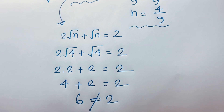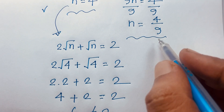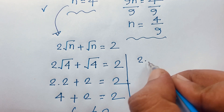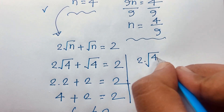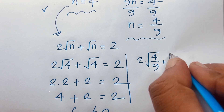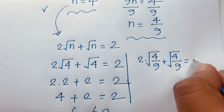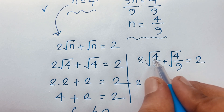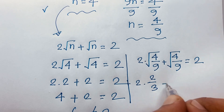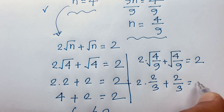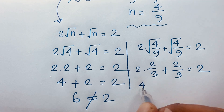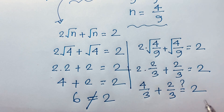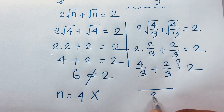Now testing n = 4/9: 2√(4/9) + √(4/9) = 2·(2/3) + (2/3) = 4/3 + 2/3. The least common denominator is 3, so 4/3 + 2/3 = 6/3 = 2.